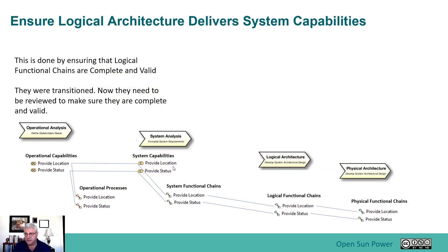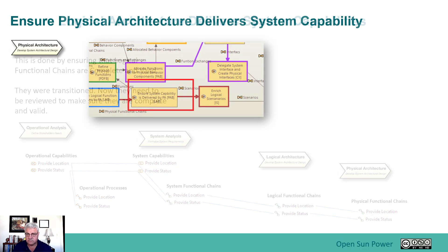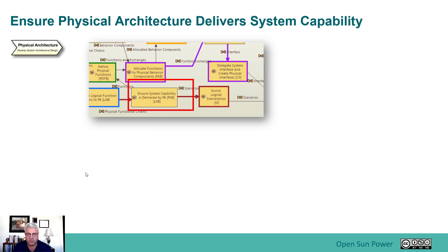What we're doing in this phase is continuing the connection that we started with logical architecture and system analysis — making sure that the capabilities get addressed as they move from left to right. This is done by looking at the physical functional chains, providing location and status, that are developed from the functional chains in the logical architecture. We're going to walk through the steps of that by transitioning over to the actual tool.